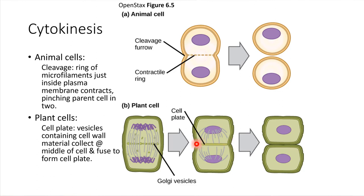Vesicles would meet up in the middle and fuse together in order to build that new cell wall. It's called a cell plate, but once it's mature, it ends up becoming new cell wall.